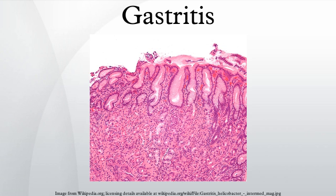Helicobacter pylori colonizes the stomach of more than half of the world's population, and the infection continues to play a key role in the pathogenesis of a number of gastroduodenal diseases. Colonization of the gastric mucosa with Helicobacter pylori results in the development of chronic gastritis in infected individuals, and in a subset of patients chronic gastritis progresses to complications. However, over 80% of individuals infected with the bacterium are asymptomatic, and it has been postulated that it may play an important role in the natural stomach ecology.